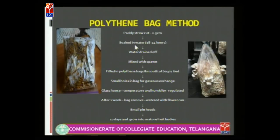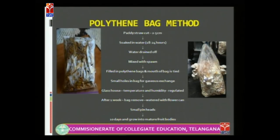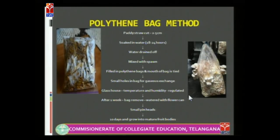The second method is the polythene bag method. Cut paddy straw into 2 to 5 cm length pieces, soak for 18 to 24 hours, and drain the water. Mix with spawn, fill into polythene bags, and tie the mouth. Make small holes on the entire surface of the polythene bag for gaseous exchange, and keep them in a glass house where temperature and humidity can be regulated. After one week, remove the bags and water them with a watering can. Small pin heads will grow on the polythene bags, and after 10 days fully mature fruiting bodies will appear.